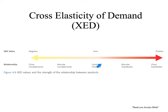If the equation comes out to a negative number, then your product and the other product are complements rather than substitutes. A complement is something you need in order to buy something else — like peanut butter and jelly. Most people who eat peanut butter on a sandwich are going to put some jelly on it. If the price of peanut butter goes up, you can imagine there's going to be a negative effect on the demand for jelly, because those two things are usually eaten together.